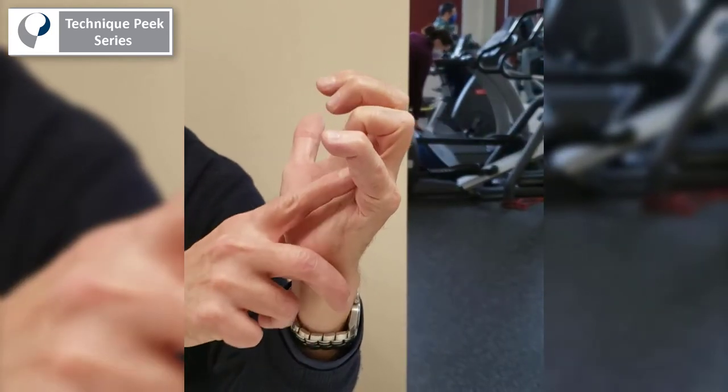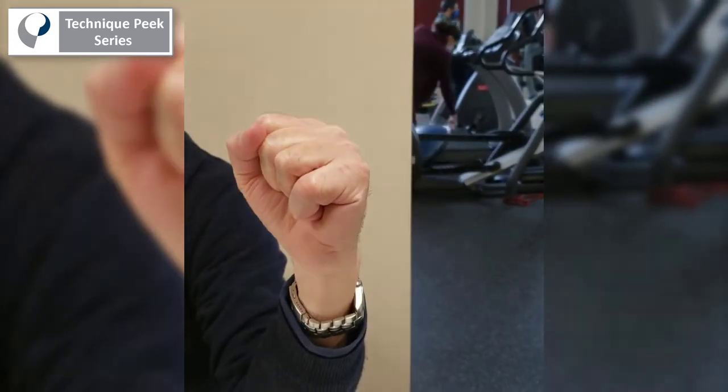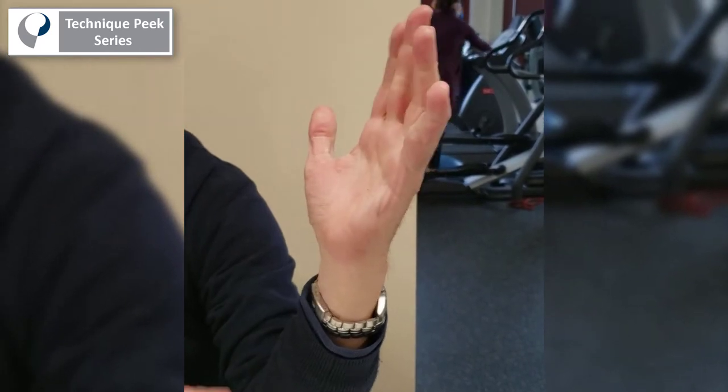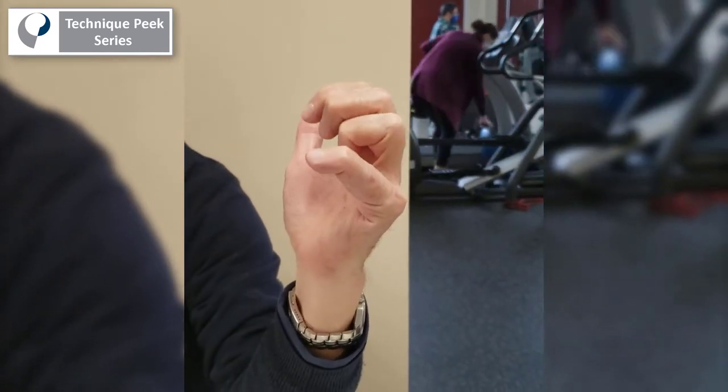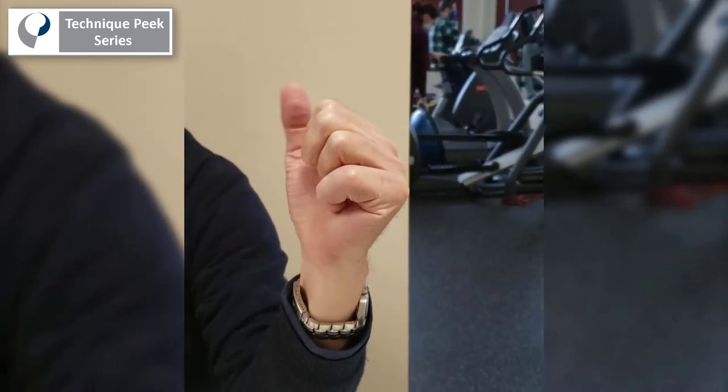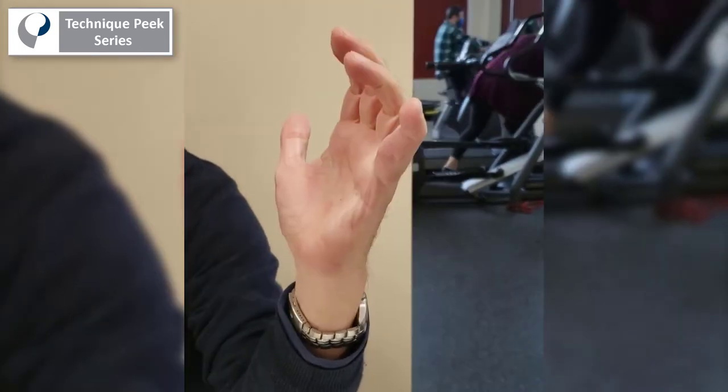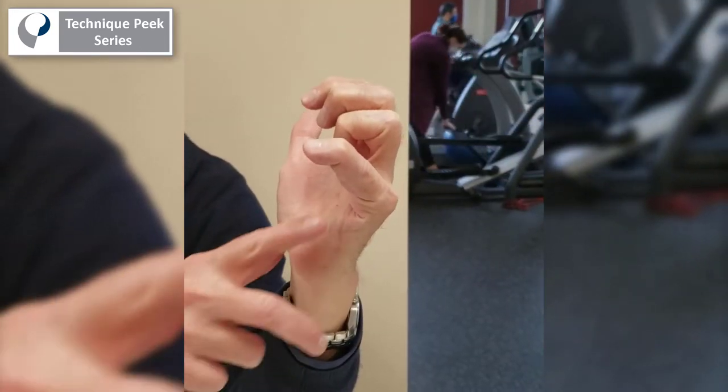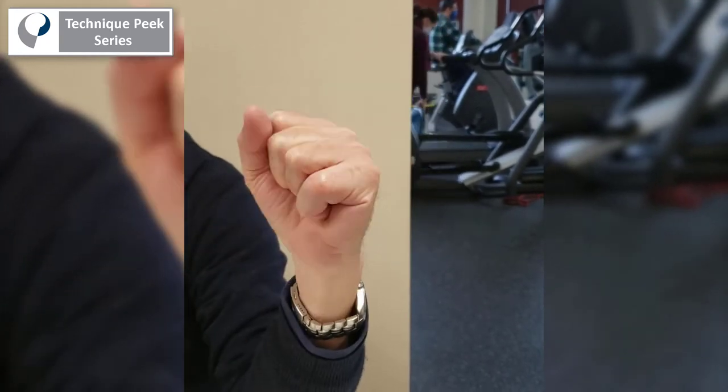This patient came in with a swan neck deformity after a PIP joint fracture dislocation. The most limiting factor for him was that he couldn't make a fist with active PIP joint flexion due to the hyperextension of his PIP joint.